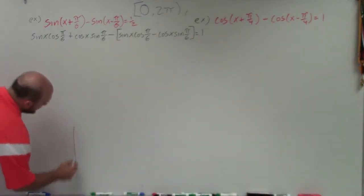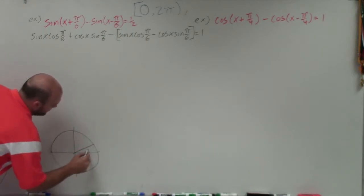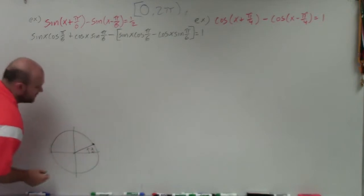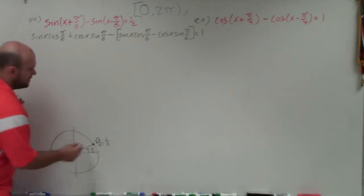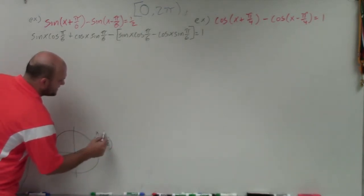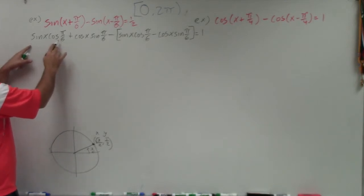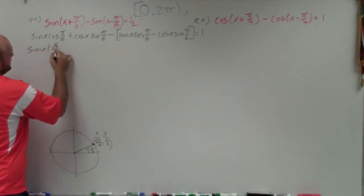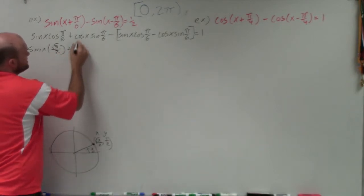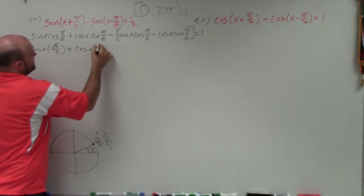To do that, we need to go back and look at the unit circle. If I have the angle pi over 6, the point where that crosses the unit circle is square root of 3 over 2 comma 1 half. Remember, cosine represents the x-coordinate and sine represents the y-coordinate. So the cosine of pi over 6 is going to be square root of 3 over 2. I can write sine of x times square root of 3 over 2, plus cosine of x times 1 half.